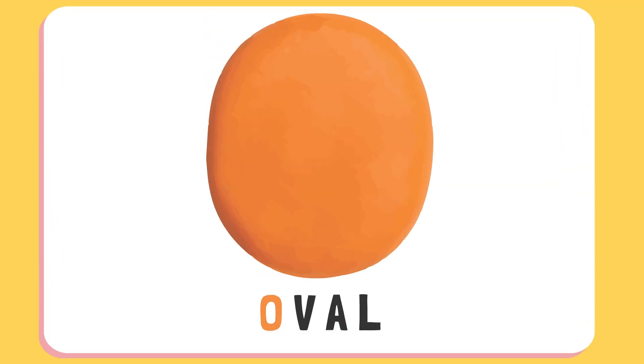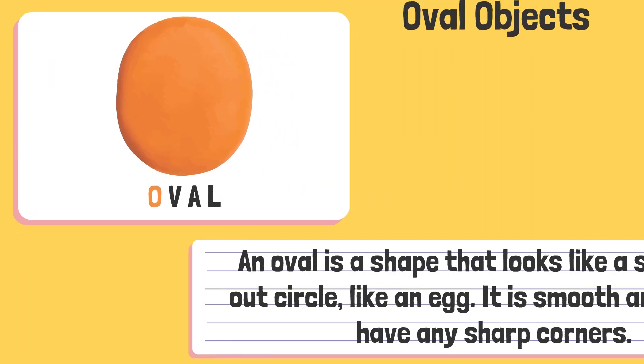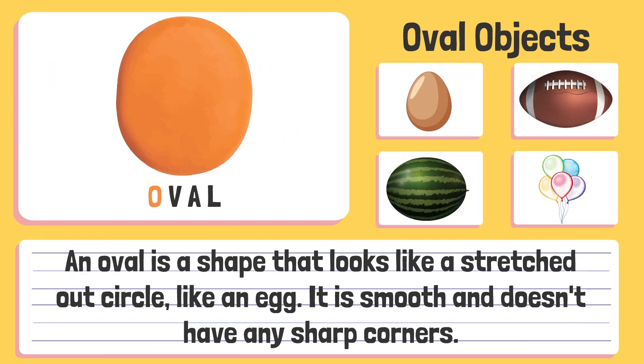Oval. An oval is a shape that looks like a stretched-out circle, like an egg. It is smooth and doesn't have any sharp corners.